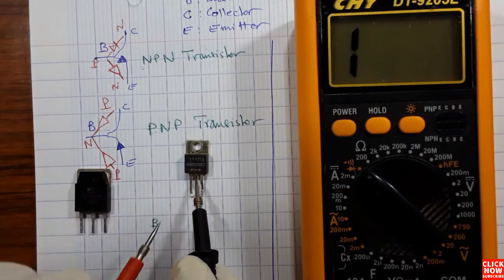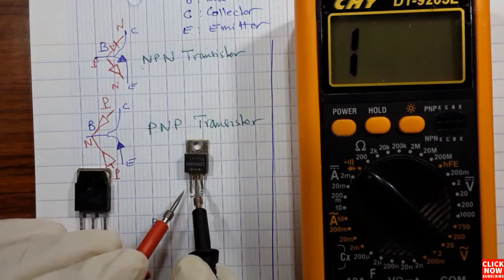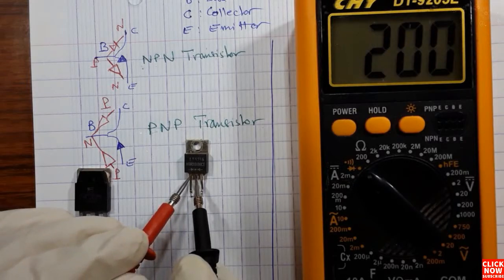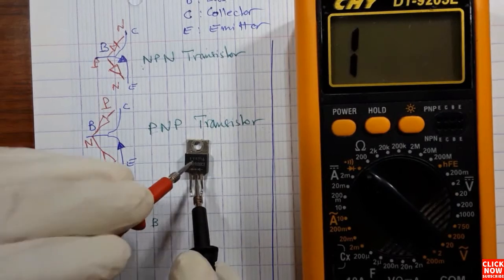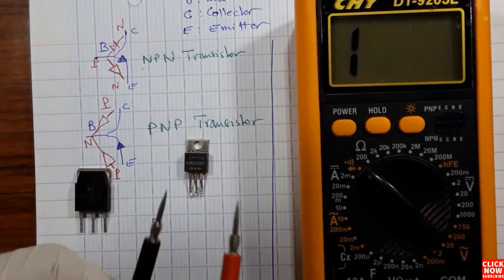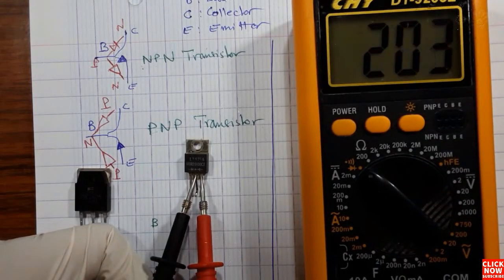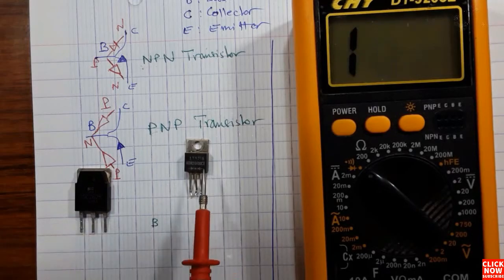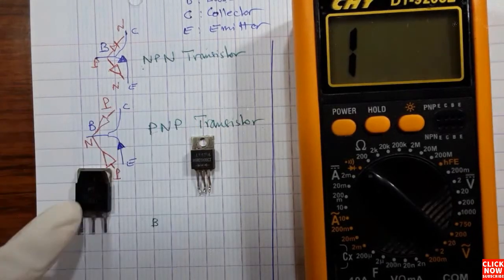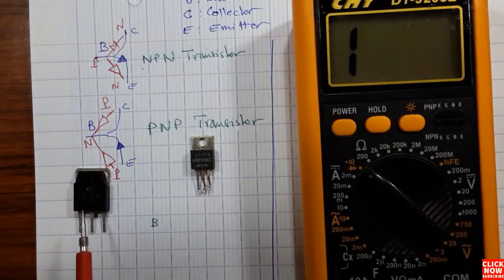Let's check. Here we put the black probe in the middle — in the base. We should get a reading between base and collector, and also between base and emitter. As you can see, we get a reading between base and emitter. Basically, this is a Schottky diode transistor — it contains two Schottky diodes, because the value on the multimeter is about 200.